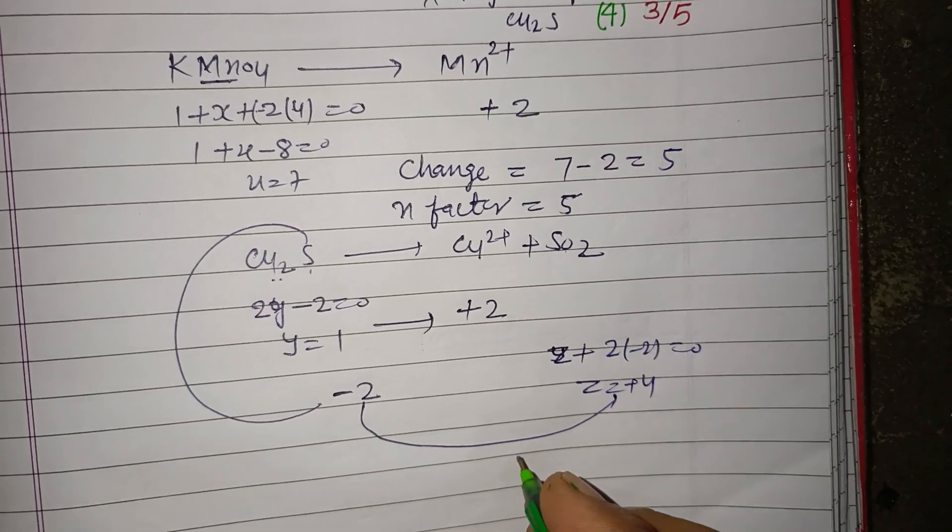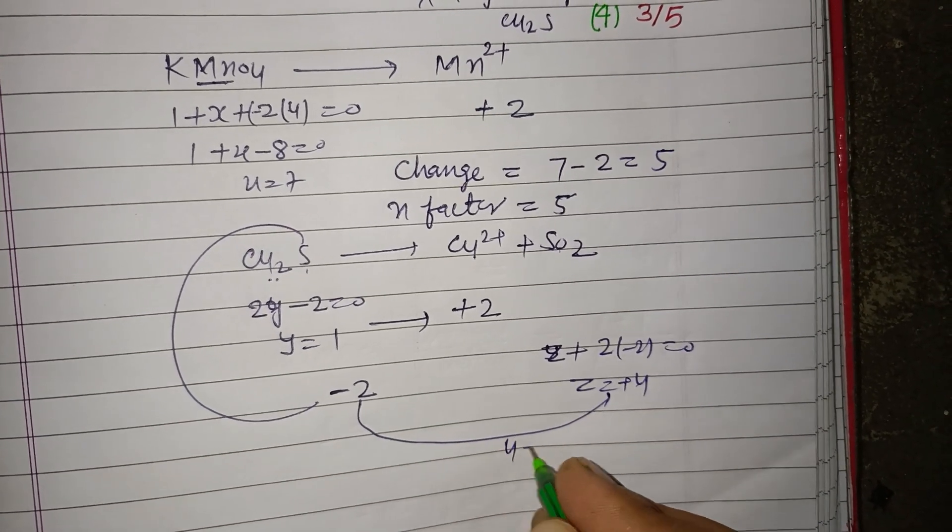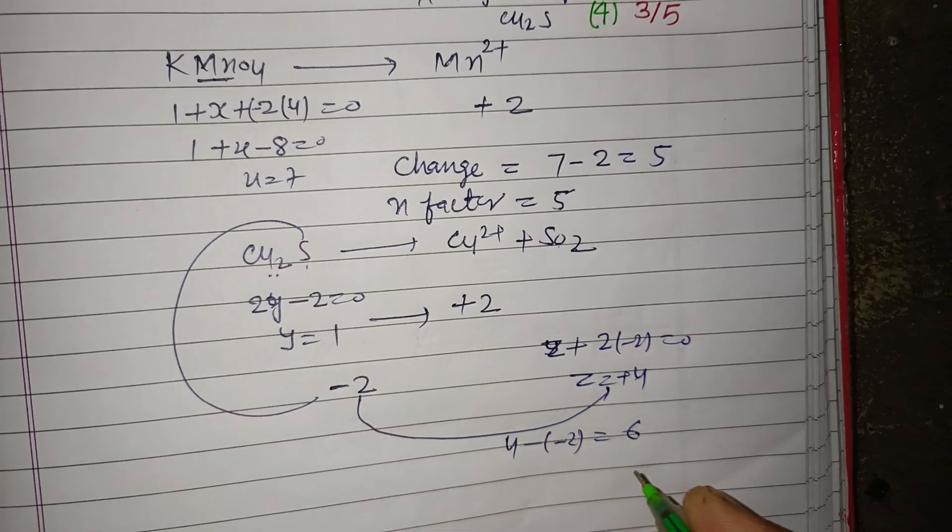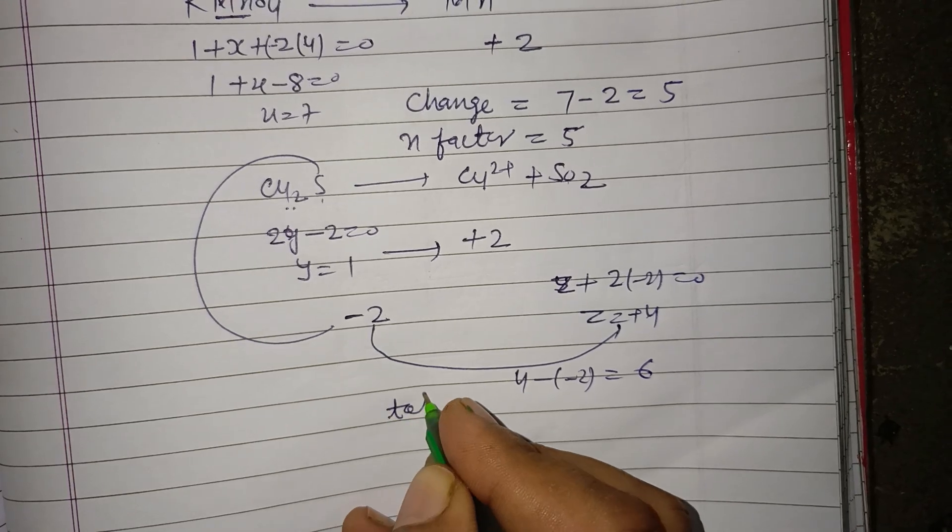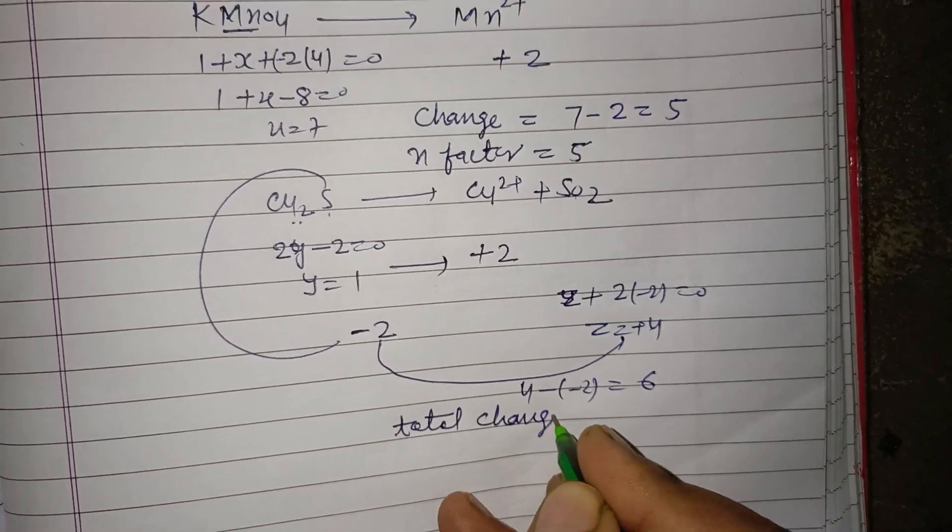From -2 to +4, the change is 4 - (-2) = 6. So the total change for Cu2S equals 2 + 6, that is 8.